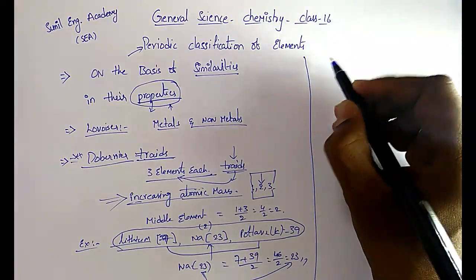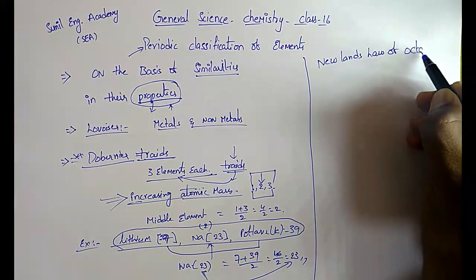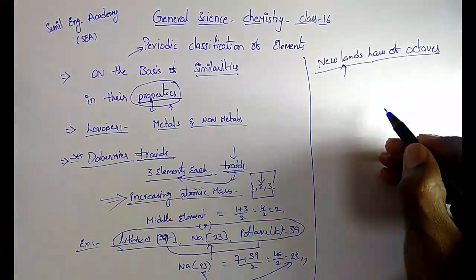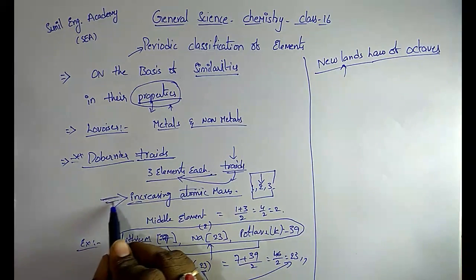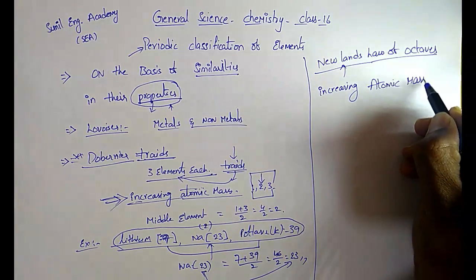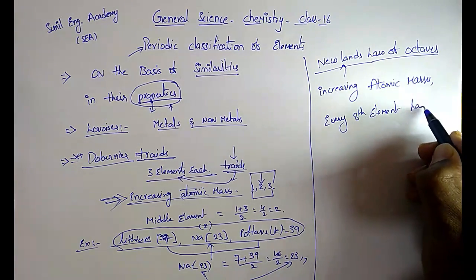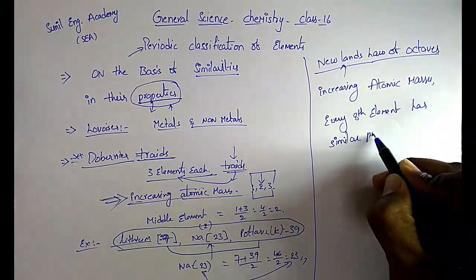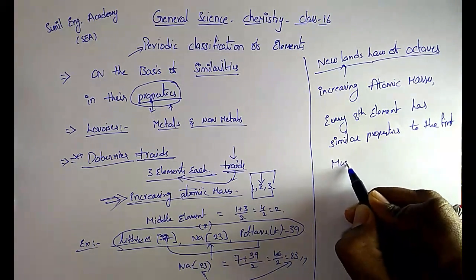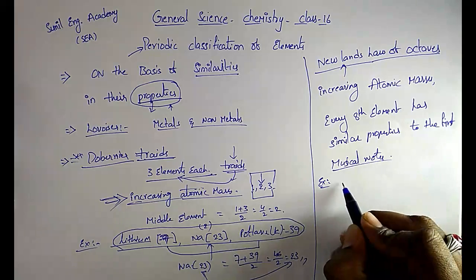After Dobereiner's Triads, the next scientist proposed the theory called Newland's Law of Octaves. According to Newland, when elements are arranged in increasing atomic masses, every eighth element has similar properties to the first — just like musical notes.